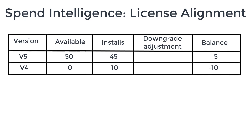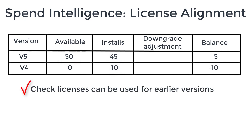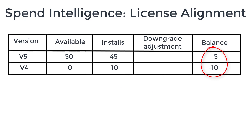In our example you can see that our entitlement of 50 V5 licenses corresponds to a liability of 45 V5 installs and 10 V4 installs, which is a problem as this adds up to 55. After confirming that we can use a V5 license to cover a V4 install, we can use our surplus of 5 V5 licenses to cover part of our V4 liabilities. Remembering to match our adjustments, we subtract 5 from V5 to add to V4.